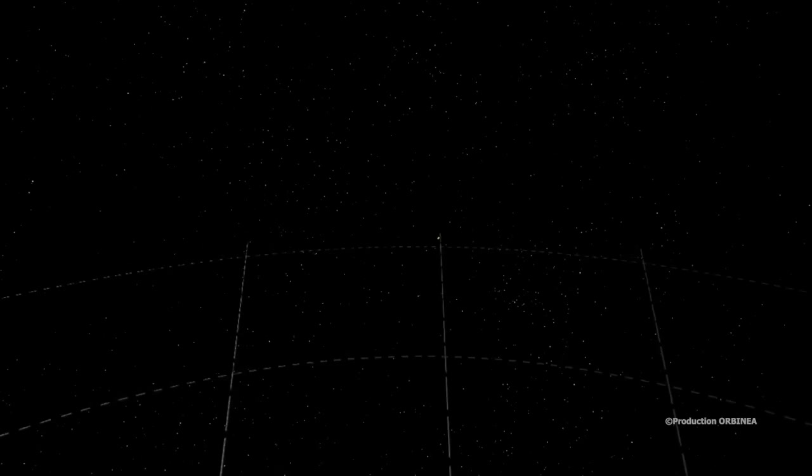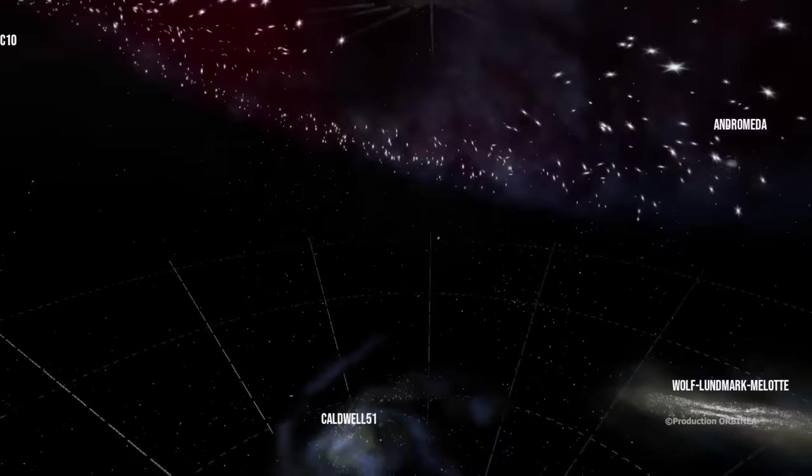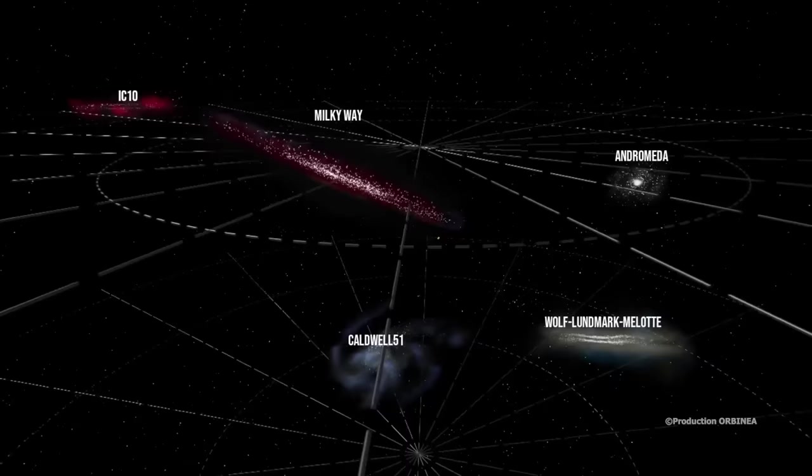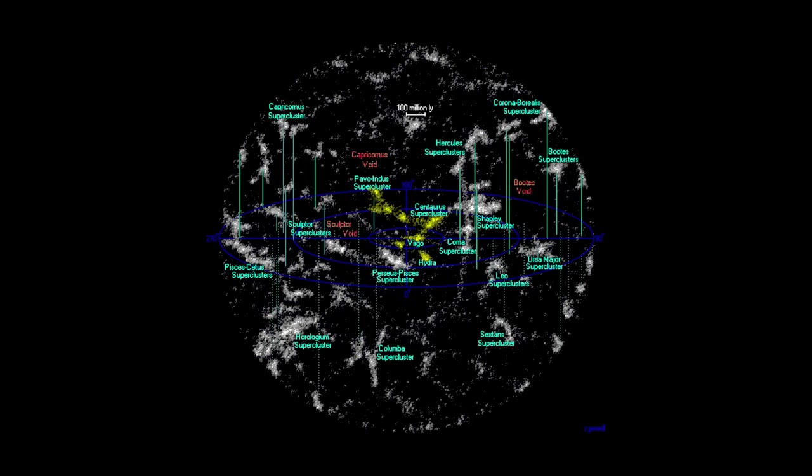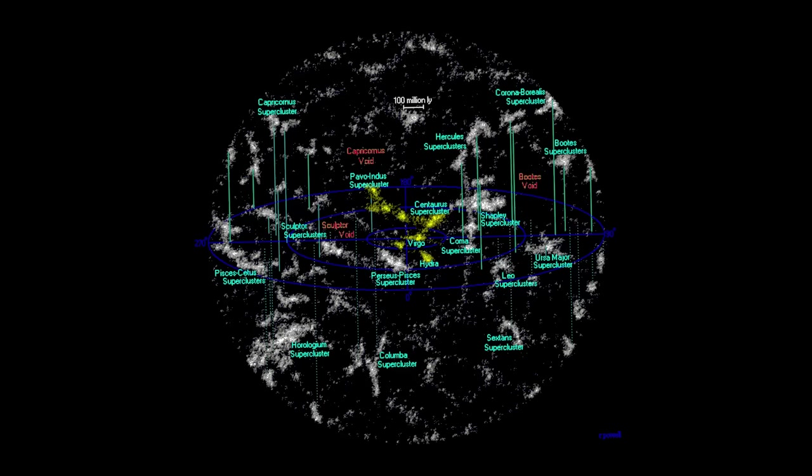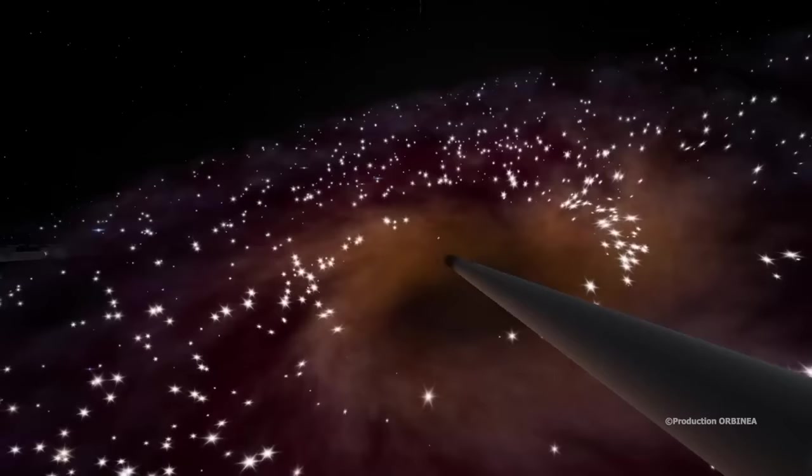But let us return to the Local Group. Despite its small size, it is a well-stocked catalogue. It includes almost all types of galaxies, except the giant elliptical galaxies, which cannot be present in such a small structure, if we can say so, compared to our human size. The size of the Local Group is approximately 10 million light-years in diameter, and its total mass is estimated at 2300 billion solar masses.